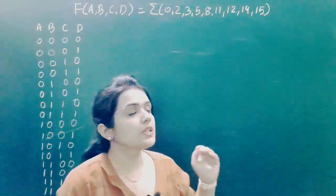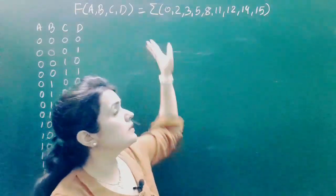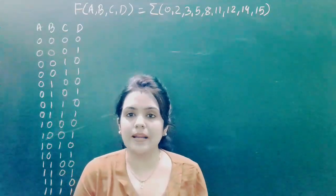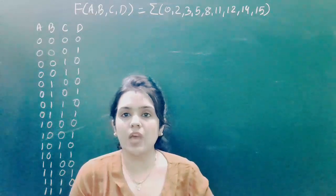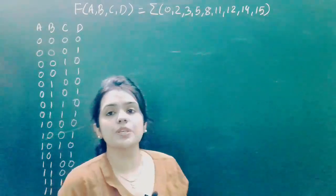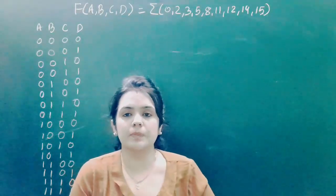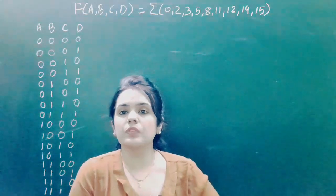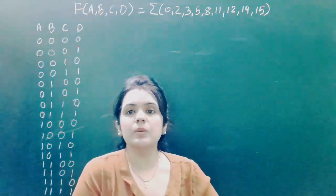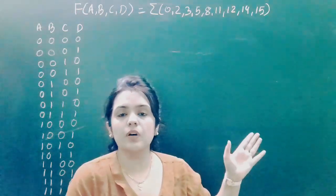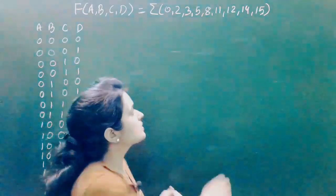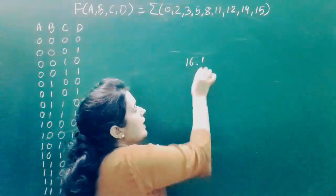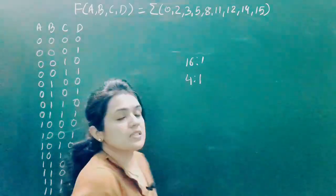In the previous video, we saw how to implement a Boolean function using the standard rule — specifically using an 8-to-1 multiplexer. In this video, we will see how to implement the same kind of Boolean function using a 16-to-1 multiplexer and a 4-to-1 multiplexer.